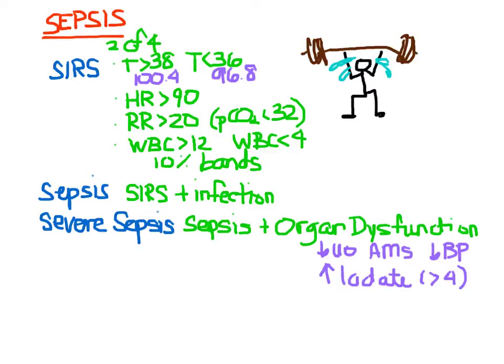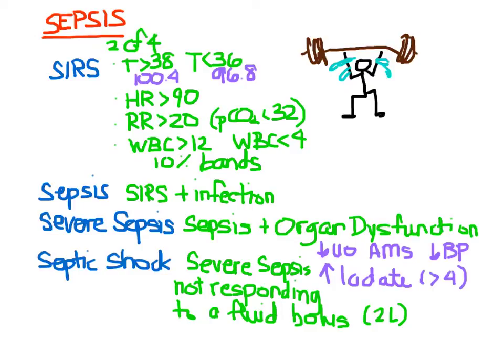Now septic shock is severe sepsis that has low blood pressure, and this is not responding to a fluid bolus. And you can see that these definitions are all kind of progressing, right, from SIRS plus infection being sepsis to severe sepsis with organ dysfunction.